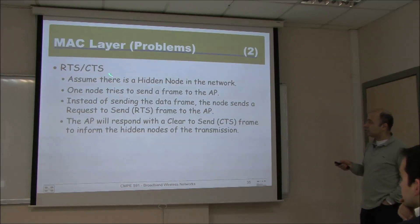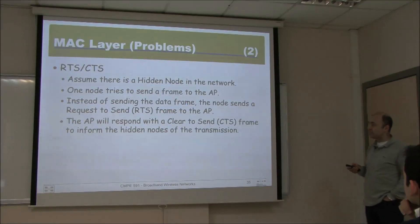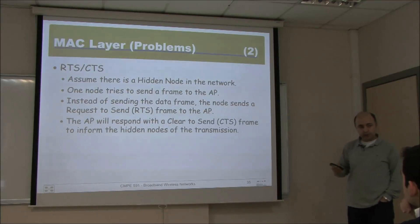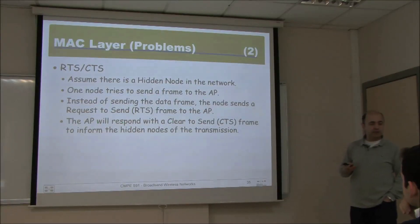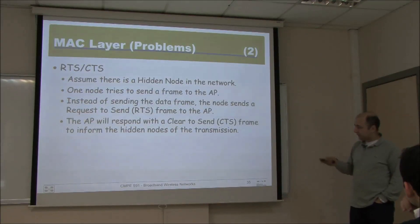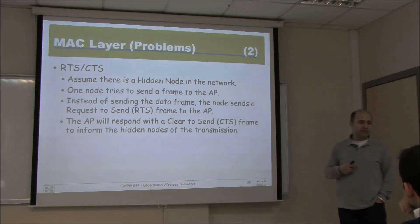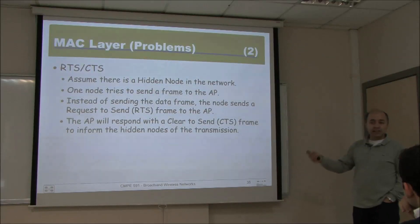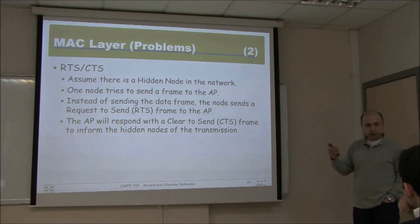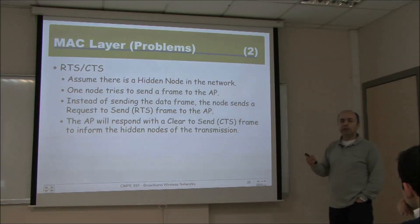The solution is the request-to-send / clear-to-send (RTS/CTS) mechanism. Instead of sending the data frame directly, the node sends an RTS to the access point. If no one else is scheduled to transmit, the access point replies with a CTS, meaning the channel is clear to send. The hidden node, although it didn't hear the RTS, hears the CTS and understands that someone is permitted to transmit. From the CTS it knows there will be a transmission and refrains accordingly.